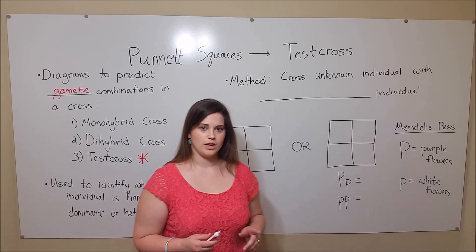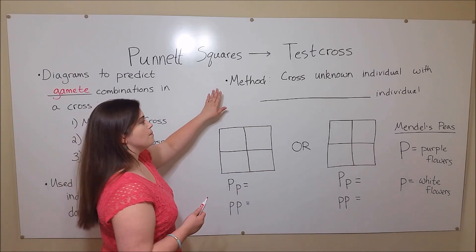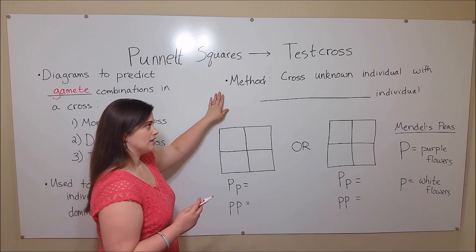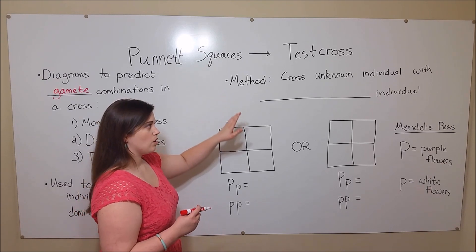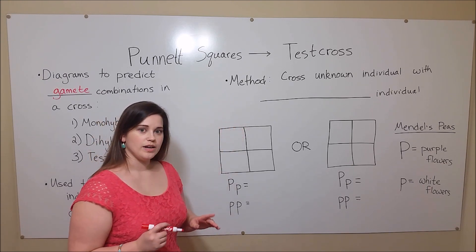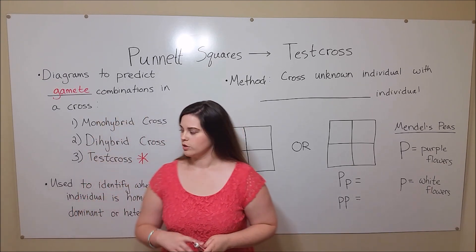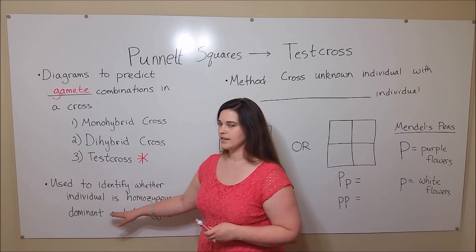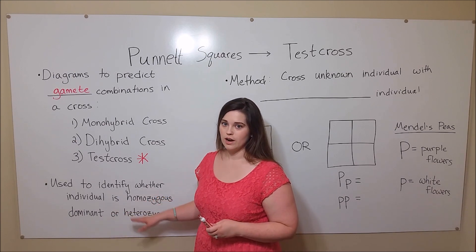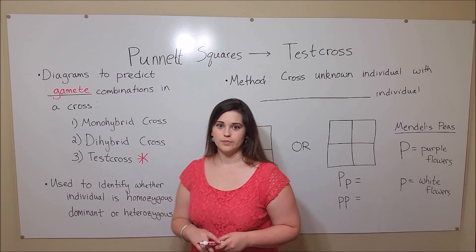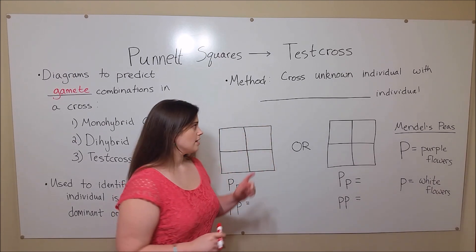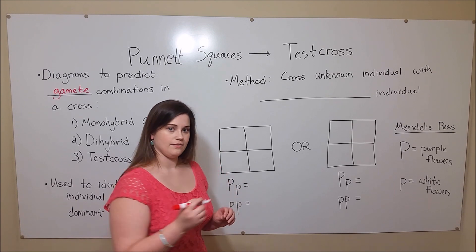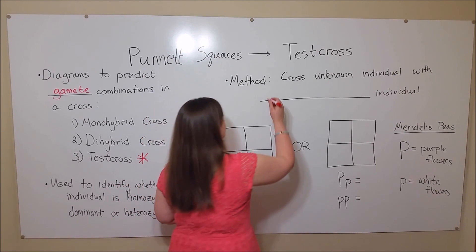A test cross is used to determine which genotype the individual is when they share that same phenotype. The method of a test cross is to cross the unknown individual — the one that is either homozygous dominant or heterozygous — with a homozygous recessive individual.